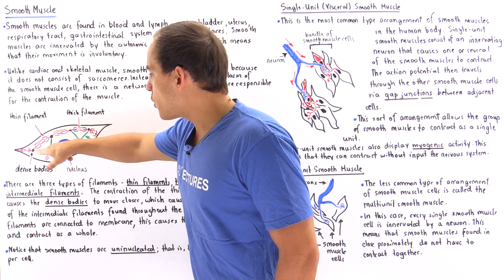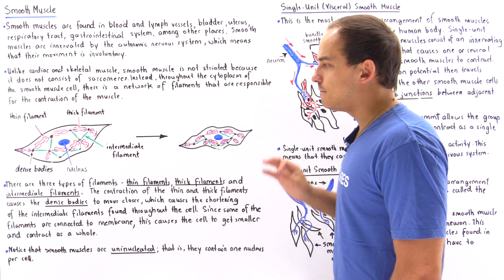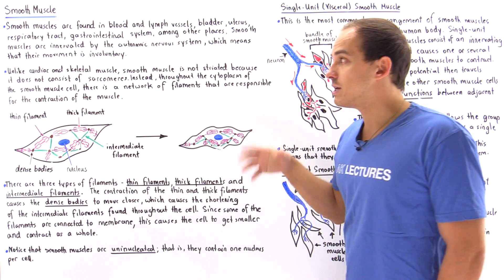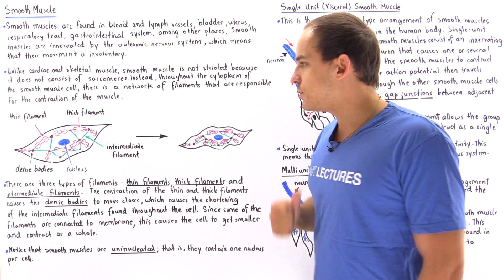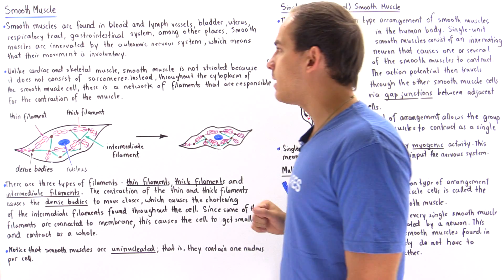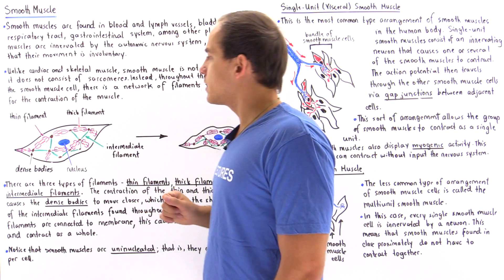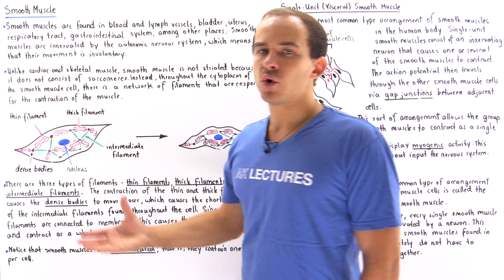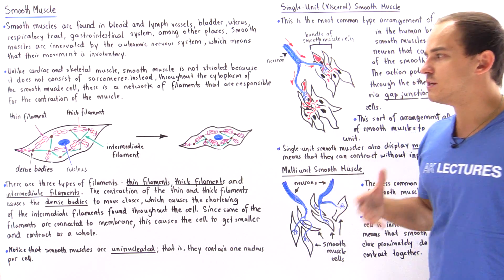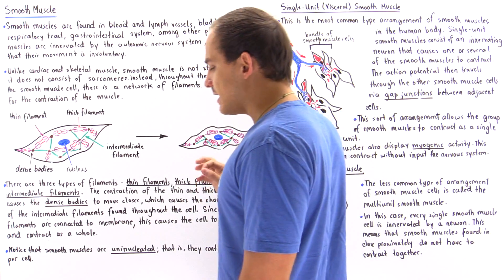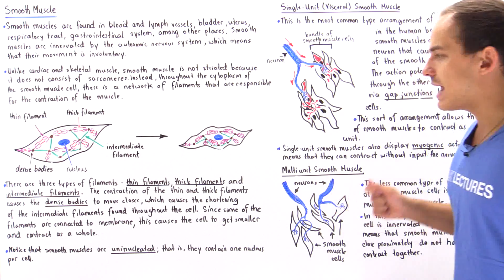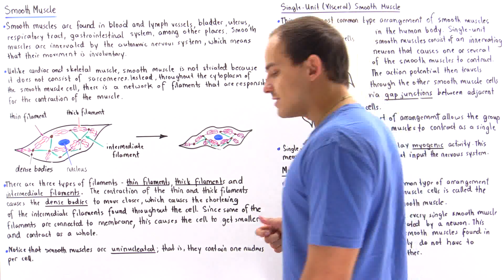We notice a network of three different types of filaments. We have the thin filament and the thick filament, which are also found in cardiac and skeletal muscle, and a new type called the intermediate filament, not found in skeletal and cardiac muscle. Thin filament is composed of actin, thick filament of myosin, and the intermediate filament is composed predominantly of desmin and vimentin.